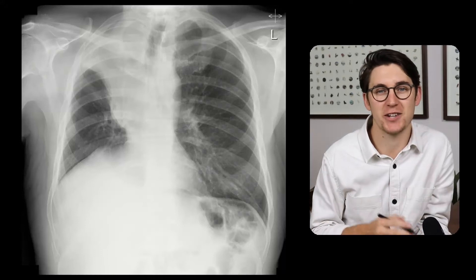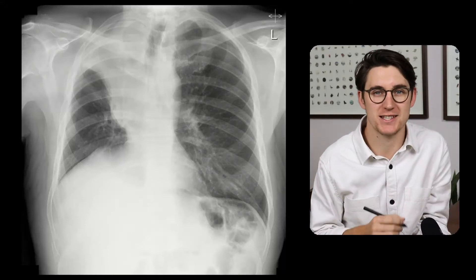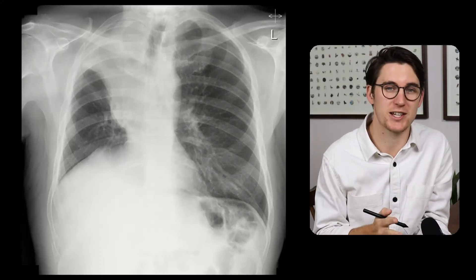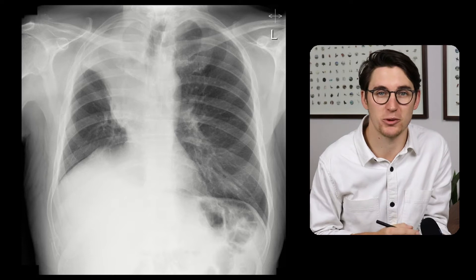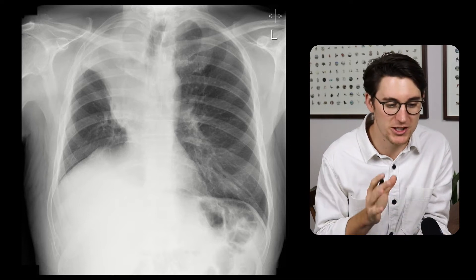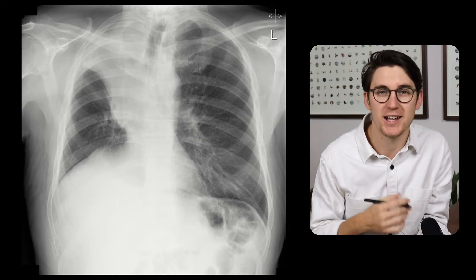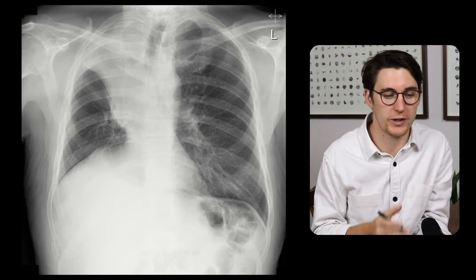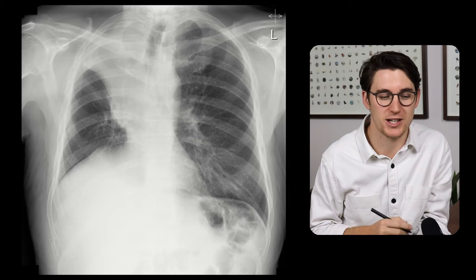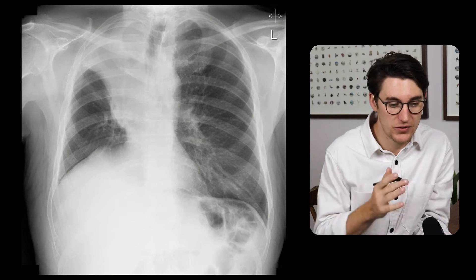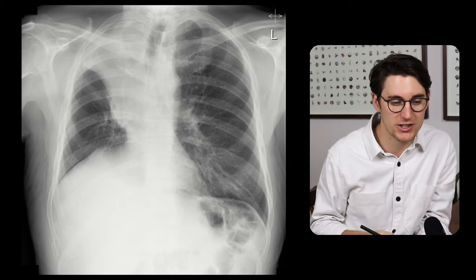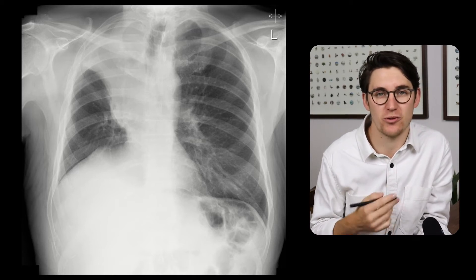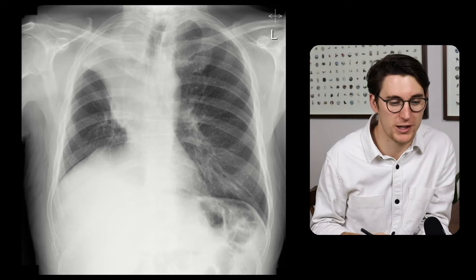Let's have a look at the golden S-sign or the reverse S-sign of Golden. I'm going to use this chest X-ray as an example because it demonstrates beautifully some of the features that we should be looking for when we encounter this sign. If you have a look at this chest X-ray, we can see clearly that there are features of right upper lobe collapse.